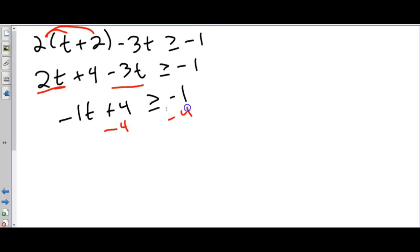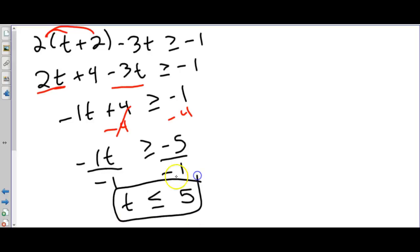So we have to minus 4, and divide by negative 1. Again when we divide by a negative number we should flip the inequality sign. So t is less than or equal to positive 5. So notice our answer didn't come out negative. It's because we divided by a negative 1.